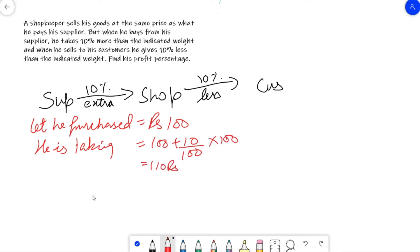When he is selling to the customer, he is getting a 10% profit. So it is 110 plus 10 upon 100 into 110. We are getting here 121 rupees.